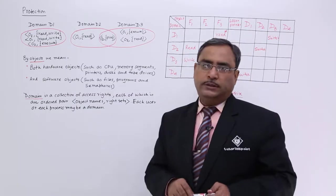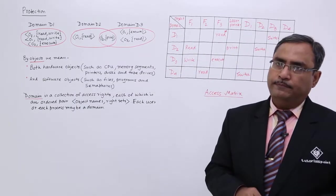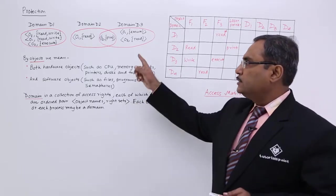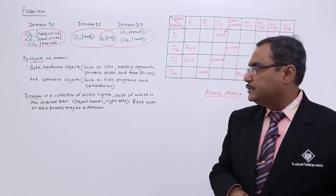One is your object and the one is your domain. So, let me discuss the object and domain at first, then I shall go for this particular diagram for further explanation.